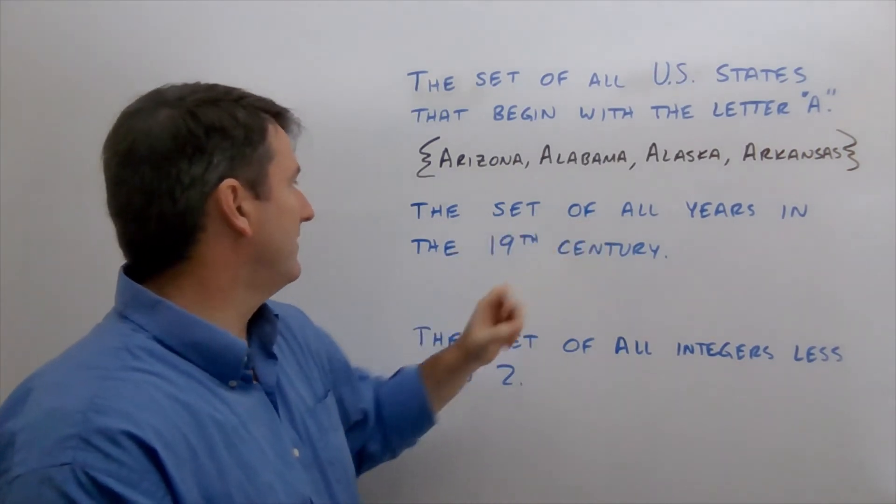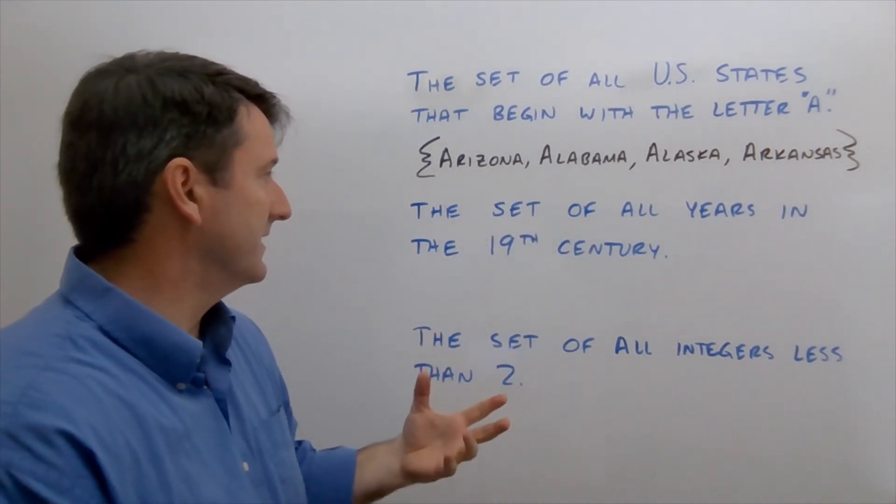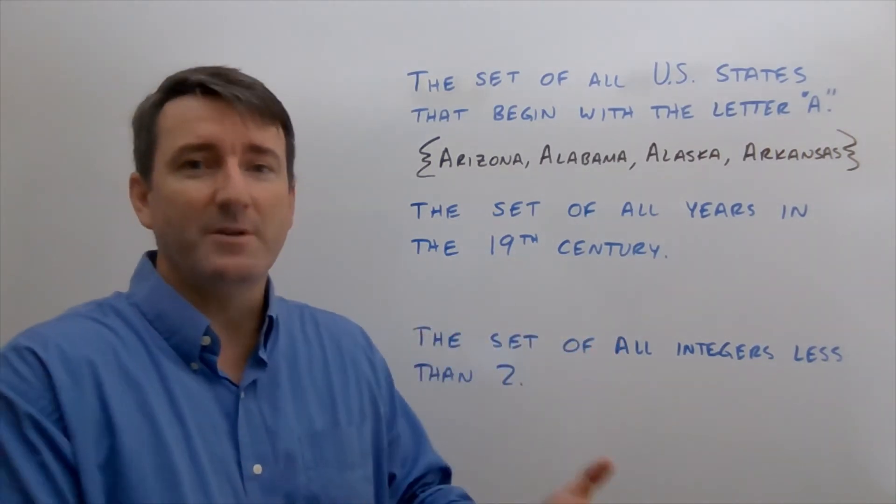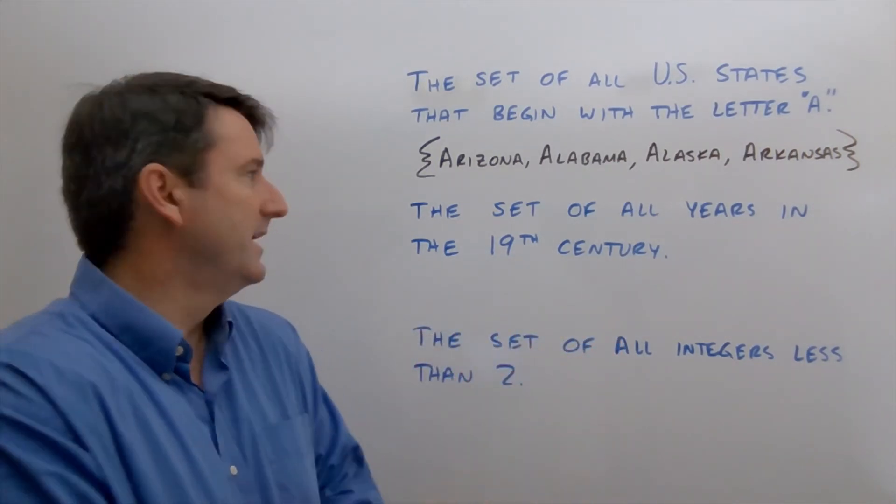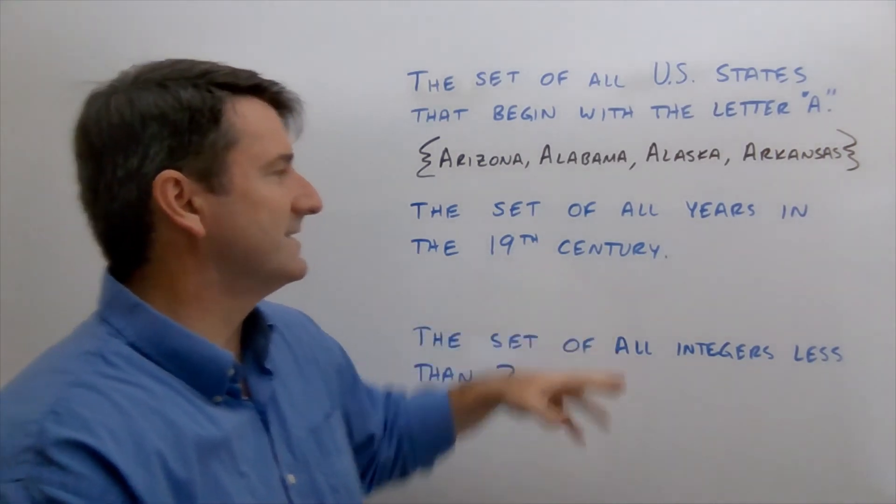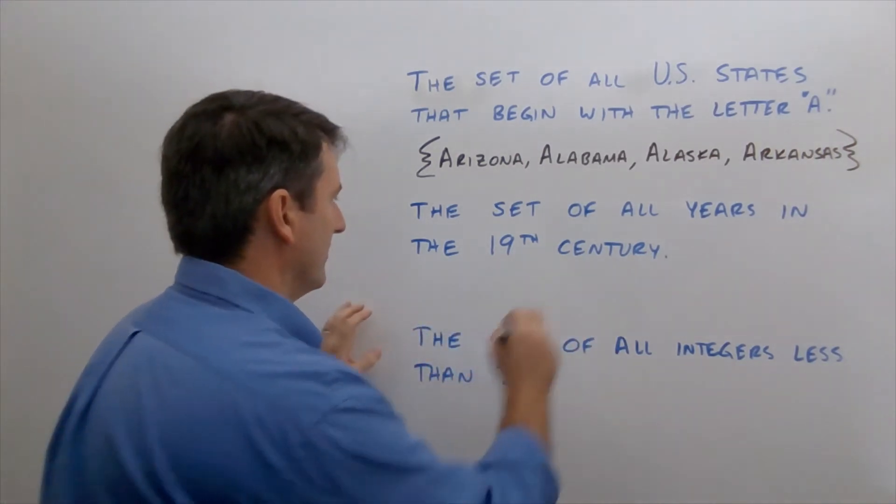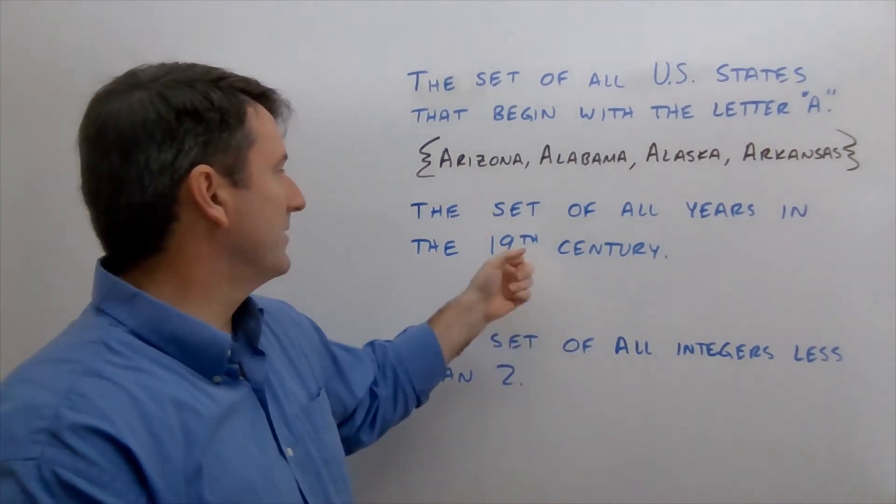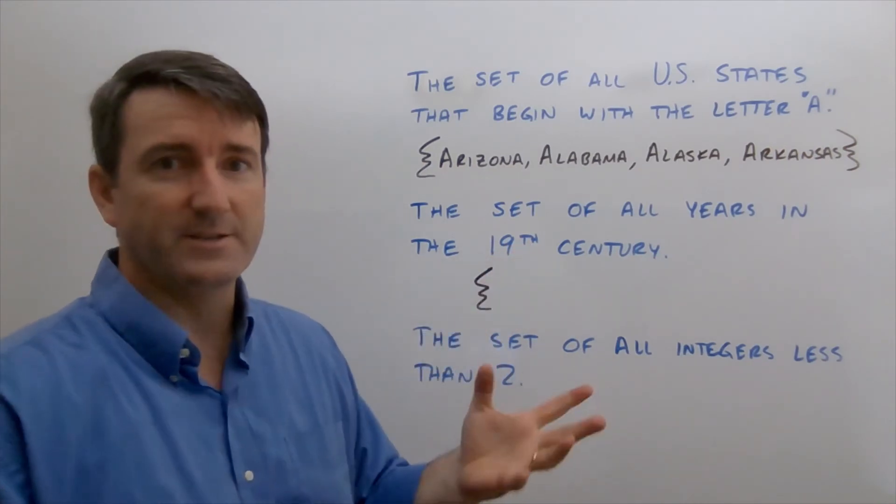Alright, the next one, the set of all years in the 19th century. So this one contains 100 members. There's 100 years in the 19th century. And so we're going to want to write this out a little bit differently. We're going to start with a brace like before. And then we're going to start with the first year of the 19th century.